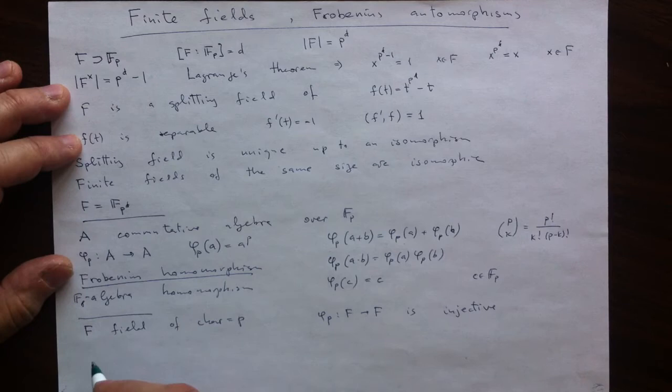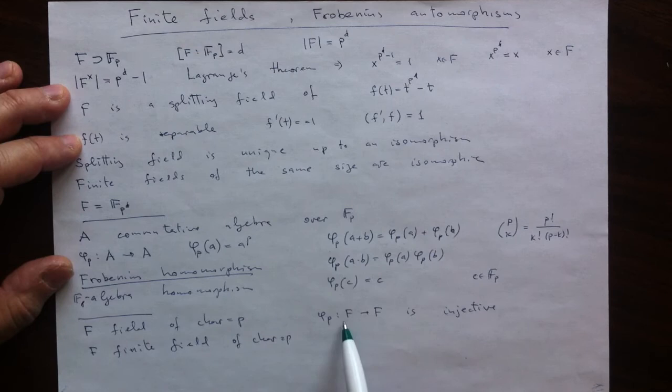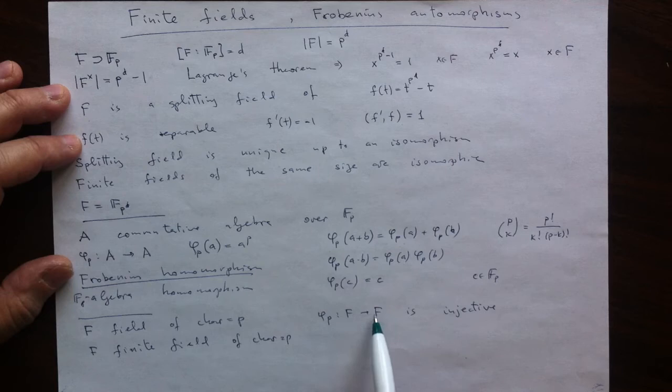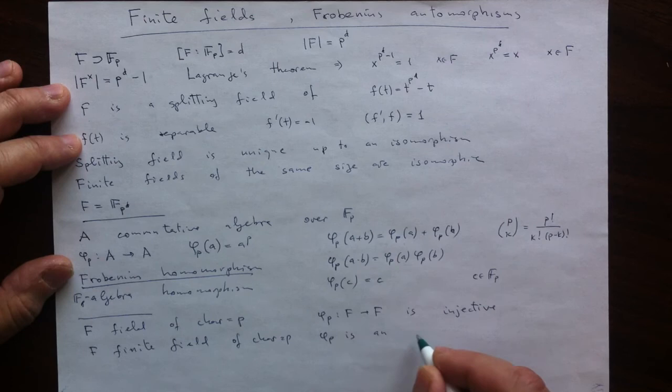And now the last piece of reduction is to assume that F is a finite field. Now we have an injective map between this finite field and itself. The number of elements are obviously the same. And injectivity must mean bijectivity. So the Frobenius homomorphism is an automorphism.